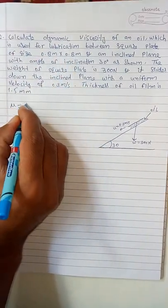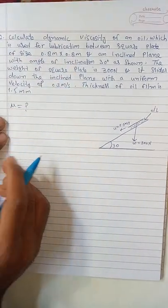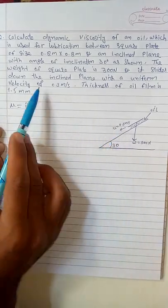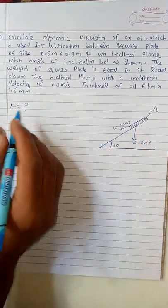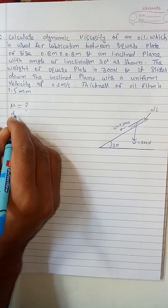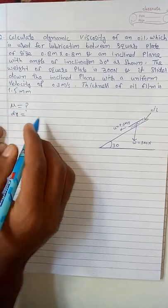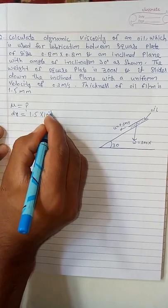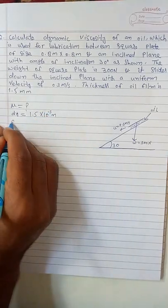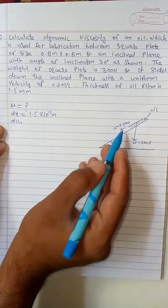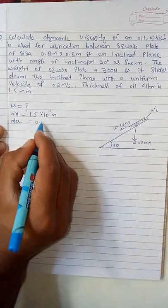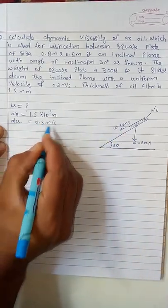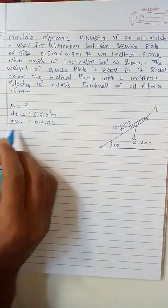We have to calculate the dynamic viscosity. Given data: thickness of oil film, I will write it as t_y, which is equal to 1.5 millimeters, that is 1.5 × 10^-3 meters. And the relative velocity is given as 0.3 meters per second.